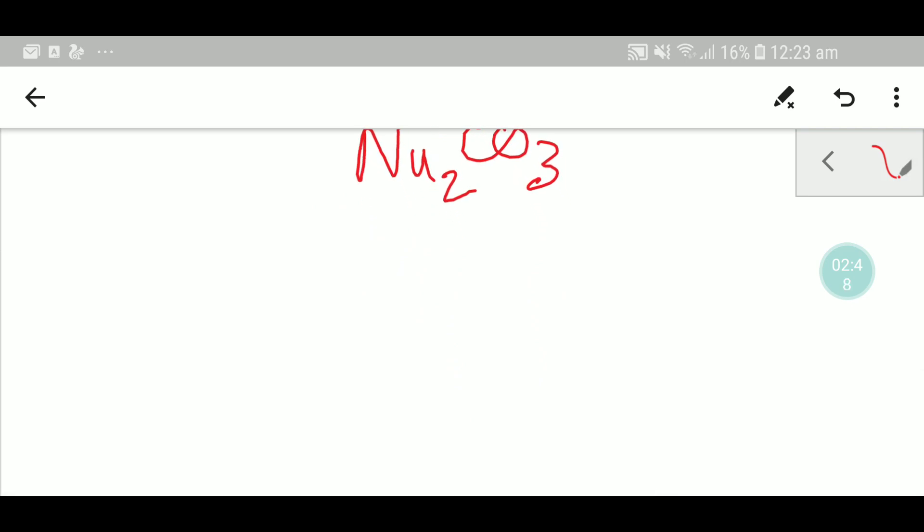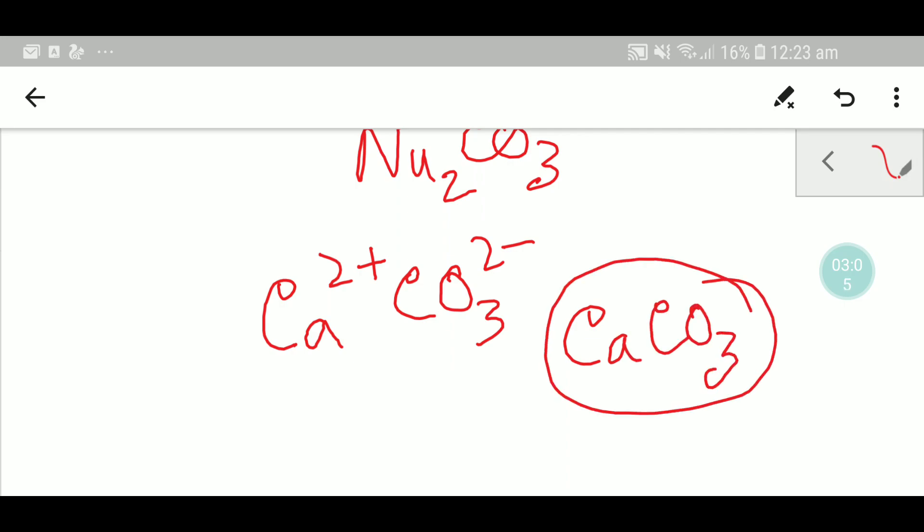Let me show you another carbonate like calcium carbonate. This is 2 plus 2 minus. So the 2 plus 2 minus vanishes each other. So we can write calcium carbonate: CaCO3. This is the formula of calcium carbonate.